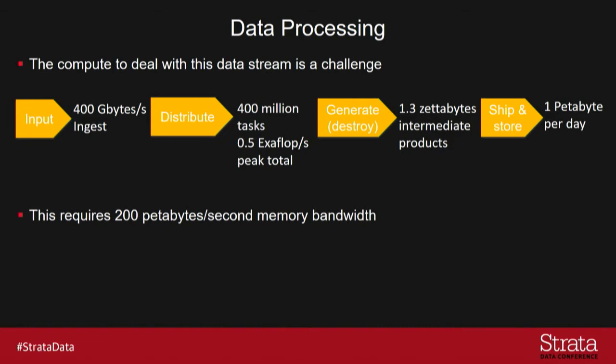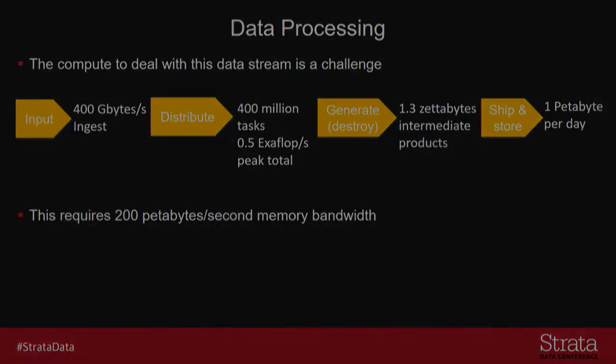So what we've come up with is some numbers. We need to ingest 400 gigabytes of data per second, distribute 400 million tasks, and run a machine continuously. At peak, it's going to run at about half an exaflop per second. This will produce 1.3 zettabytes of intermediate data, which we have to create and destroy. And then after all of that, we produce a petabyte of imaging data a day, which we distribute to regional centers and archives around the world for astronomers to look at.